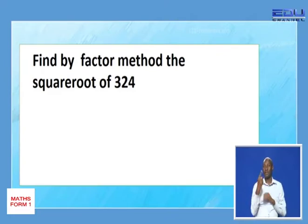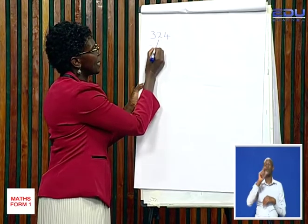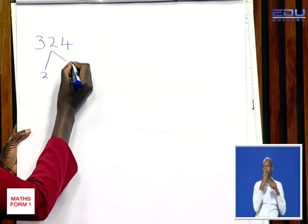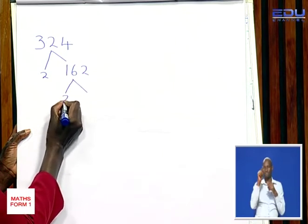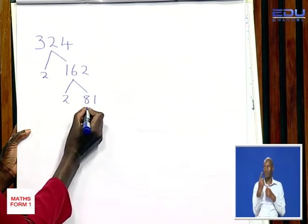The first example: find by factor method the square root of 324. Now, to get the square root of 324, we get the factors of 324. Divide by 2. 2 will go here once, 6, 2. Again, divide by 2, it will give you 8, 1. 162 divide by 2, it will give you 81.